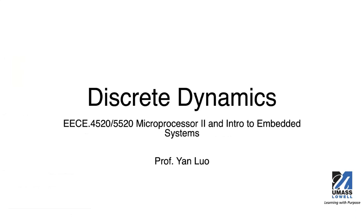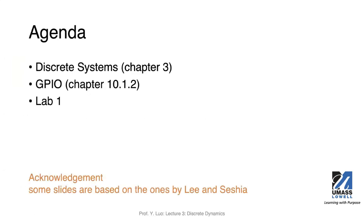Today we're going to talk about discrete dynamics. If you have read the book, this is from the third chapter. Also in today's lecture, I will talk a little bit about GPIO, because you will be using GPIOs in the first lab. At the end of this lecture, I will talk a little bit more about lab one, although I expect that we will have further discussion next week regarding lab one.